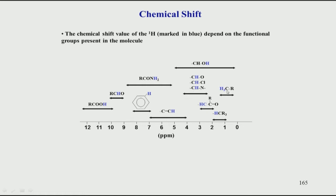For example, if you have a methyl group attached to an oxygen, as in an ether, that methyl will not come in the normal 0-2 ppm range but will be downfield shifted. That is because the oxygen pulls electrons towards itself and this hydrogen becomes deshielded.